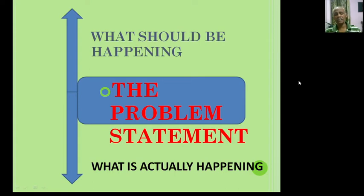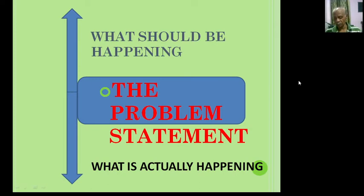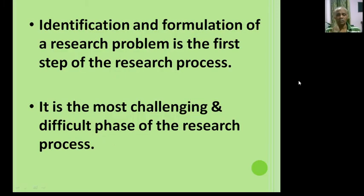In a nutshell, the journey between two points — what should be happening and what is actually happening — generates a logical question, and that question is called the problem statement, also known as the research problem statement or definition of the research problem. Identification and formulation of a research problem is the first step of the research process.